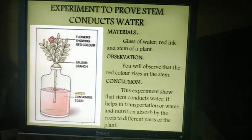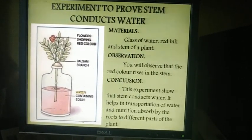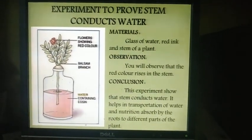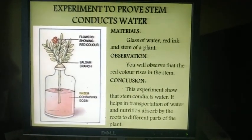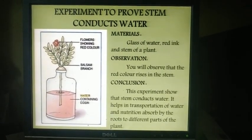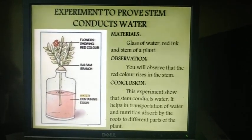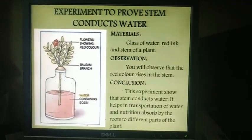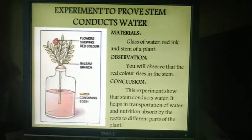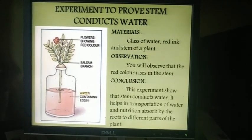Let us perform a small experiment to prove that the stem conducts water to the plant parts. Materials required: a glass of water, red ink, and a stem base. Observation: you will observe that the color rises in the stem. Conclusion: this experiment shows that stem conducts water. It helps in transportation of water and nutrients absorbed by the roots to different parts of the plant.